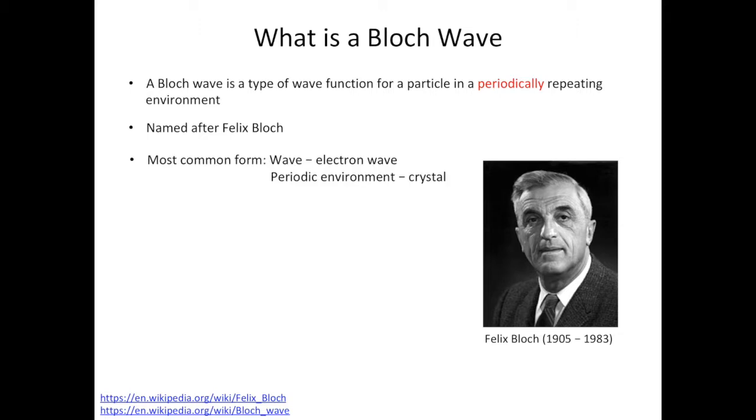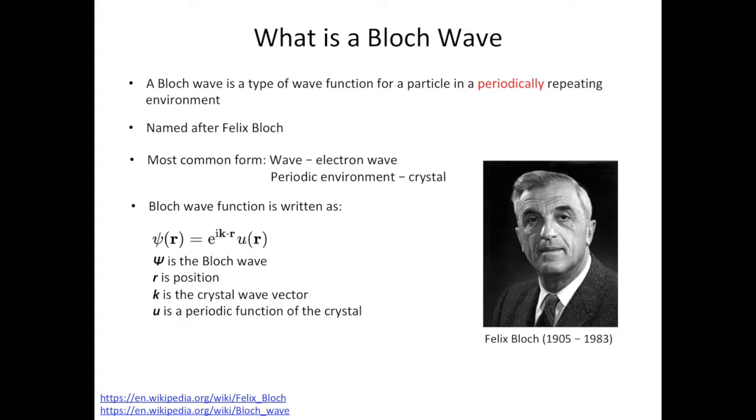When we think about the Bloch wave, the most common form is we have the electron wave as the plane wave and we have the crystal to offer the periodic environment or periodic potential. The Bloch wave function is expressed as phi(r) equals e to the power of ikr multiplied by u(r). Looking at these parameters one by one, phi is the Bloch wave, r is the position, k is something we call crystal wave vector and u is the periodic function of the crystal.